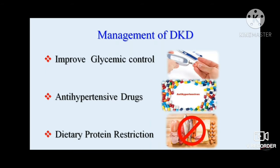For modern management of DKD, improved glycemic control is a key goal. We must monitor HbA1c levels. It appears sensible to optimize HbA1c aggressively in the early stage of disease with no advancement in target organ damage.